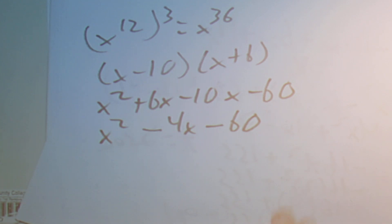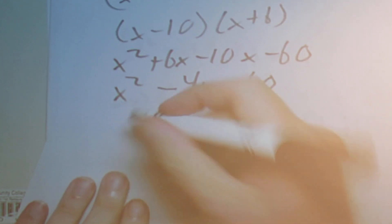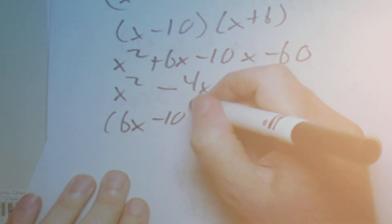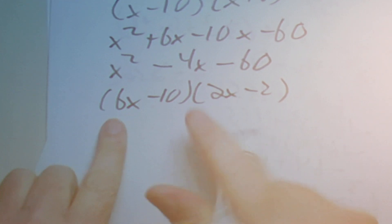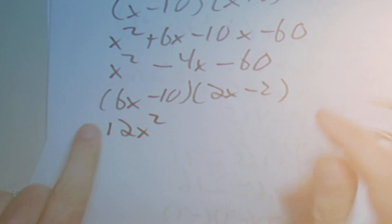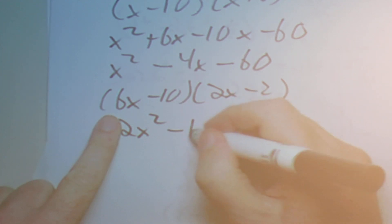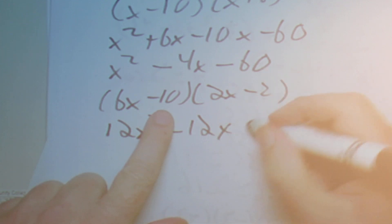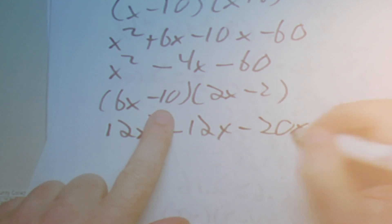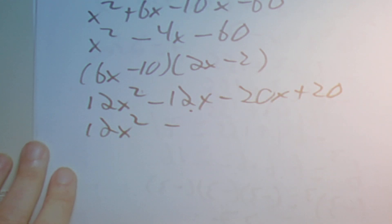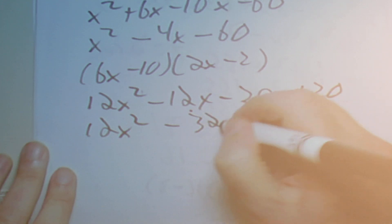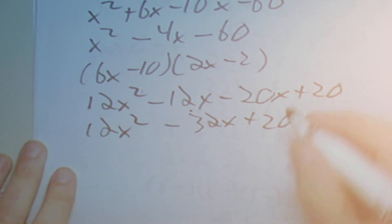The next type is the same thing. We have 6x minus 10 times 2x minus 2. First is 12x squared, outer is minus 12x, inner is minus 20x, and last is plus 20. Then we combine like terms to get 12x squared minus 32x plus 20.